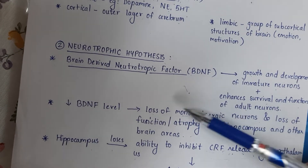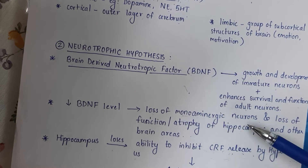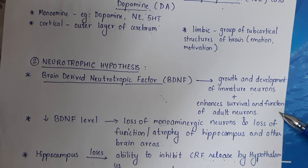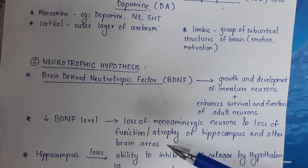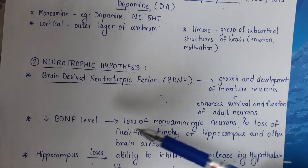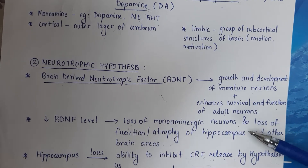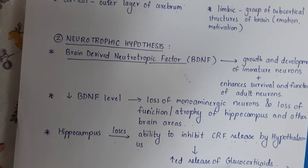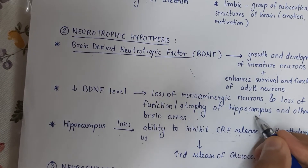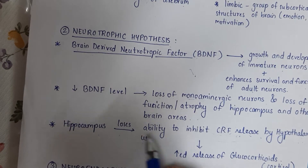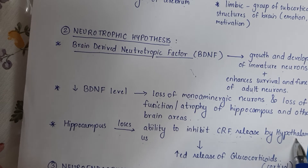If the level of BDNF suddenly decreases, the growth will decrease and neurons will be affected. There is loss of neurons — monoaminergic neurons — and loss of their functions. Atrophy means the size will be reduced, so there is atrophy of the hippocampus and other brain areas. Our focus here is the hippocampus. As the neurons in the hippocampus undergo atrophy, function is lost, growth is less, and neurons are lost. It also loses the ability to inhibit CRF release by the hypothalamus.